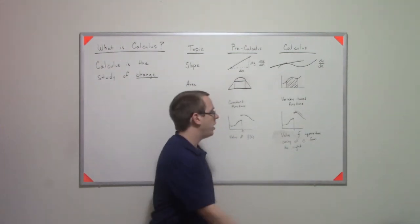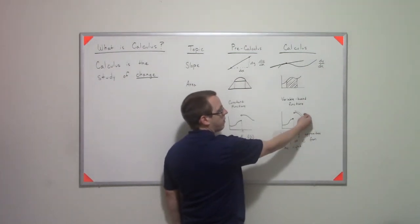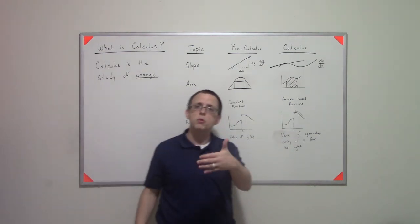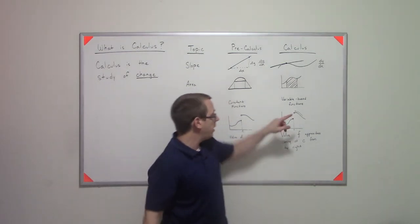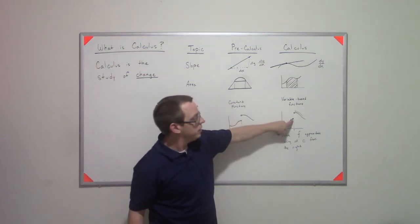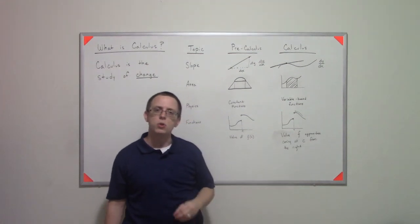Well, calculus is going to give us a way of describing what happens as we approach that value. No, we can't hit that value because the function isn't, at the value c, the function is defined differently. But what about the value as you get really close?